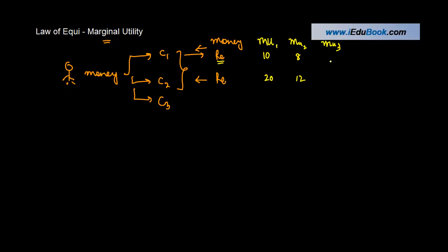For MU3, you get 6 here and 6 here. MU4 will give you 5 here and 2 here. So these are various utilities that you get in respect of these two commodities.